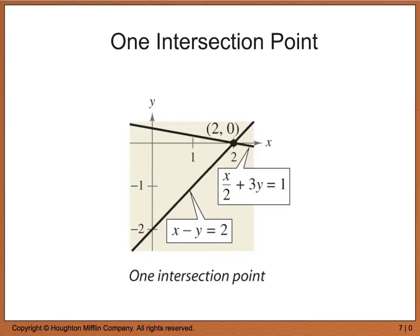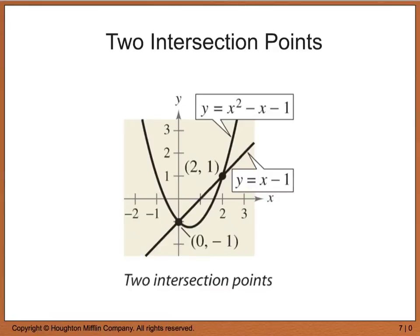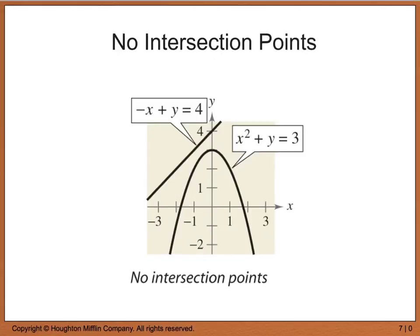Before we start doing an example, remember there are going to be three scenarios when solving systems of equations. One, we can have one point of intersection — graphically this means one coordinate point, so there is one solution to that system. The second scenario would be two or more intersection points, meaning we have two solutions to the system. And the third scenario would be where there are no points of intersection — for example, two parallel lines will generate no points of intersection.